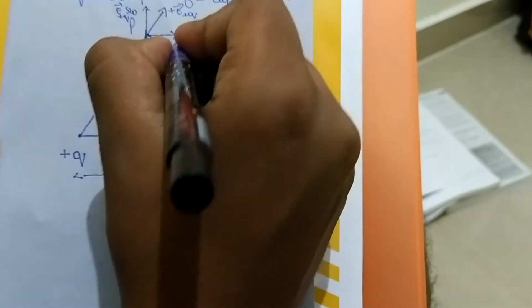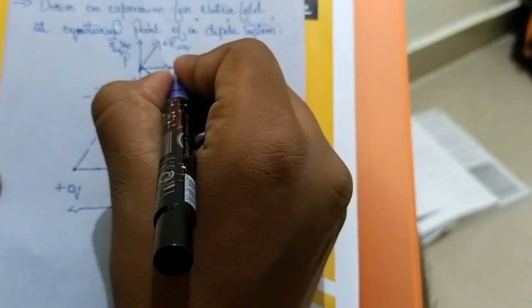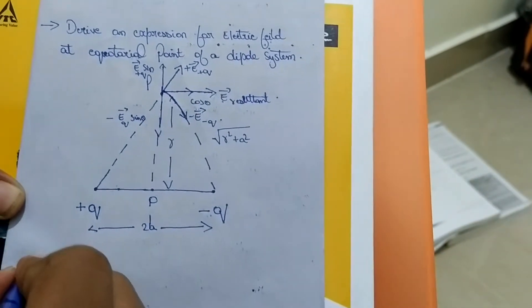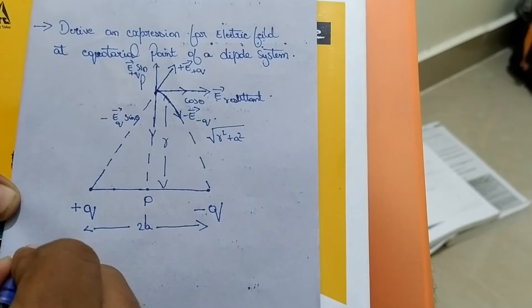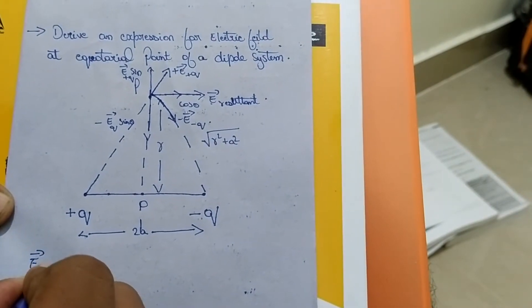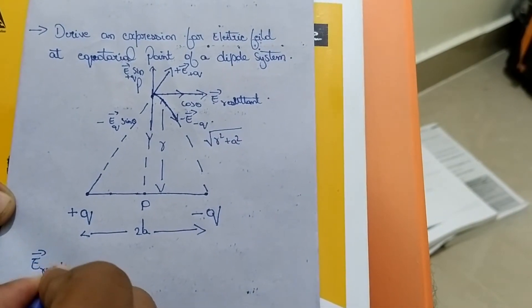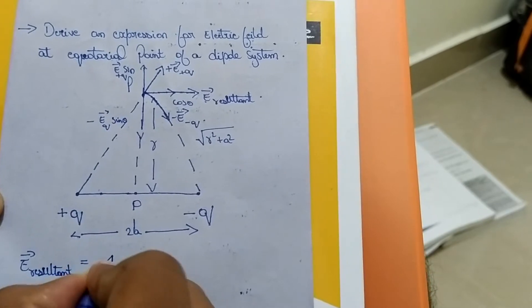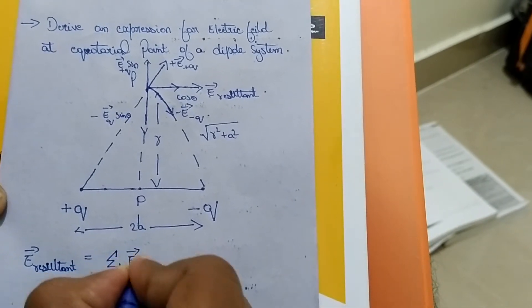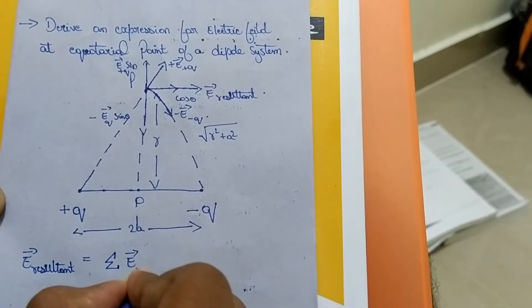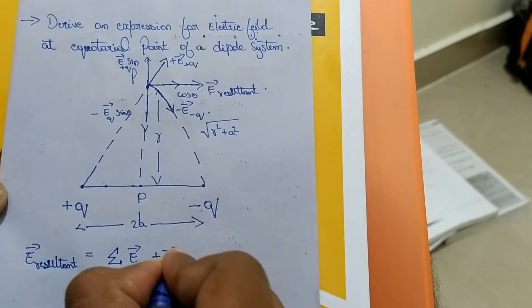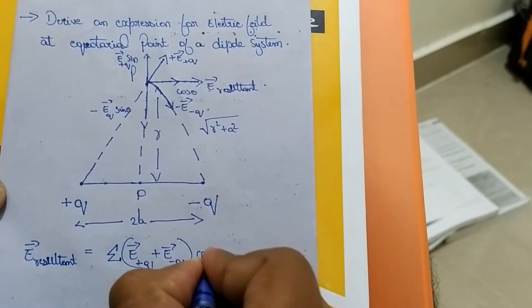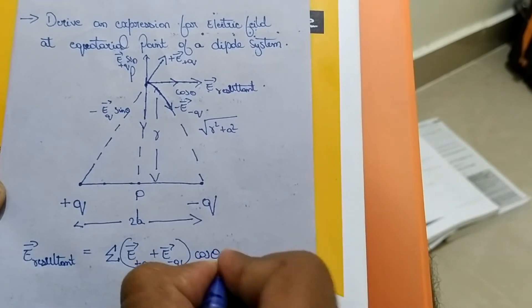Since the sine components cancel each other, the cosine components are in the same direction and add up. Therefore, E resultant is the summation of the electric field of plus Q and the electric field of minus Q — specifically their cosine components.